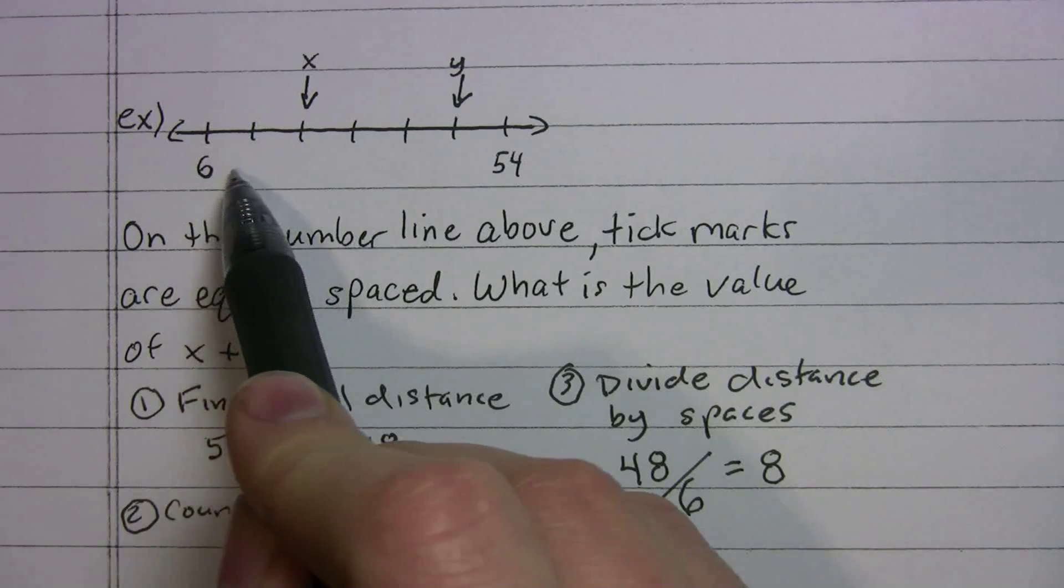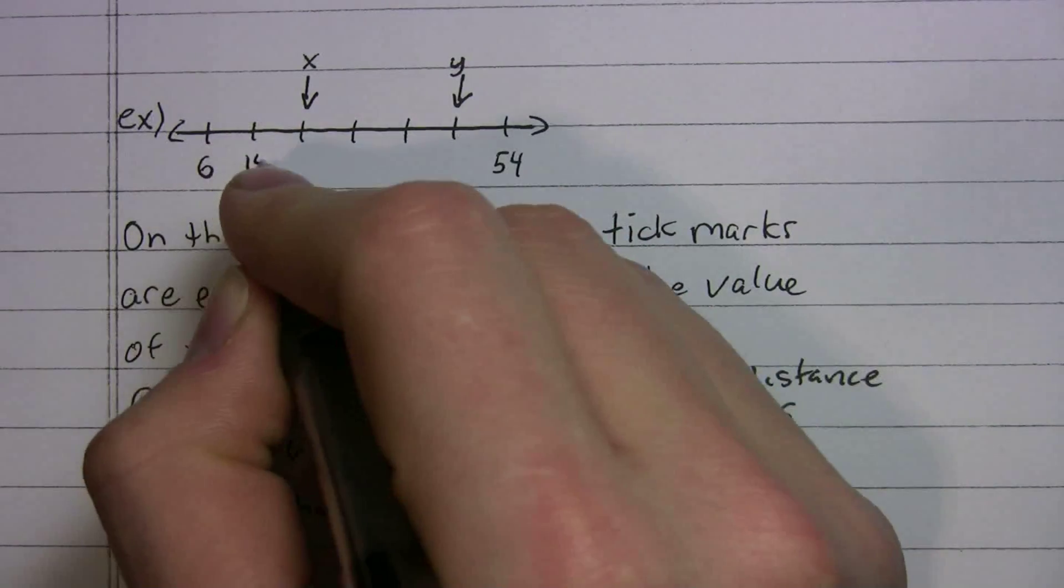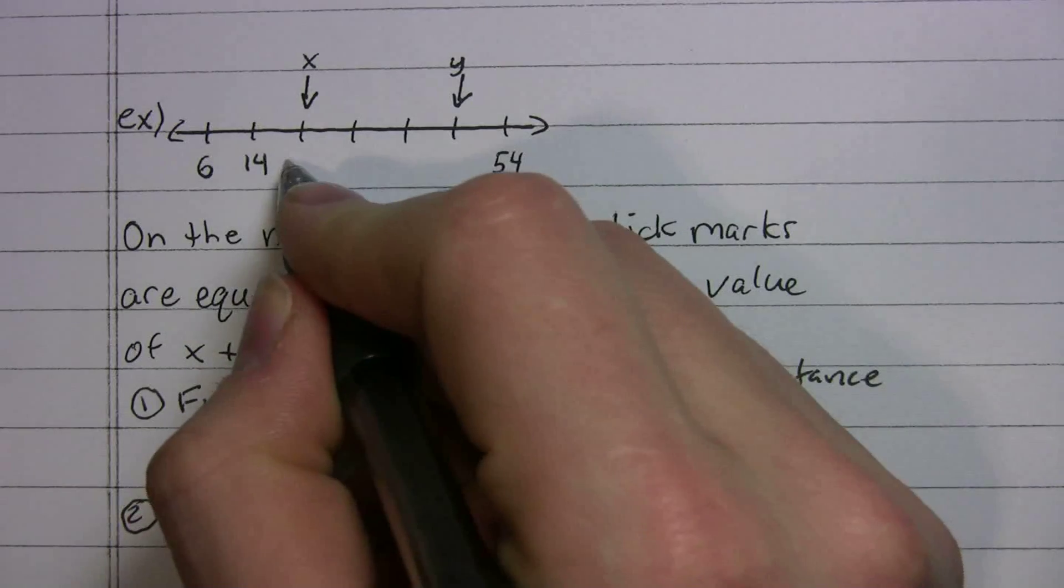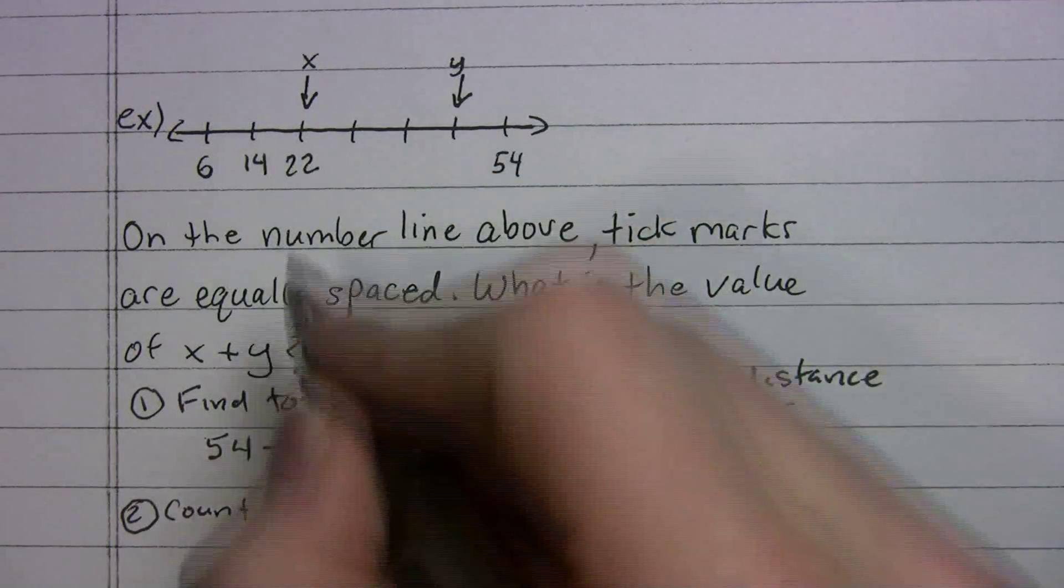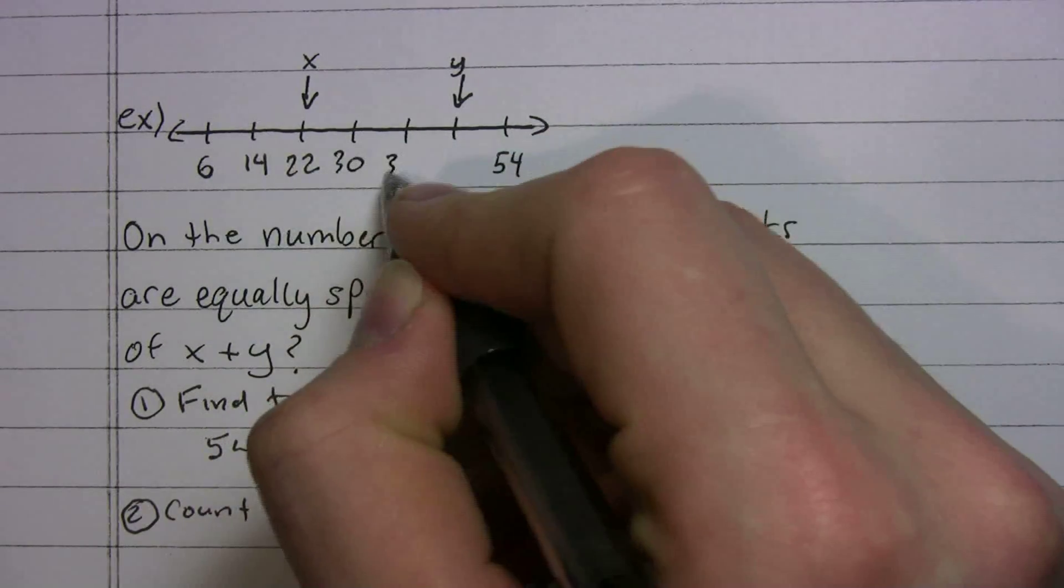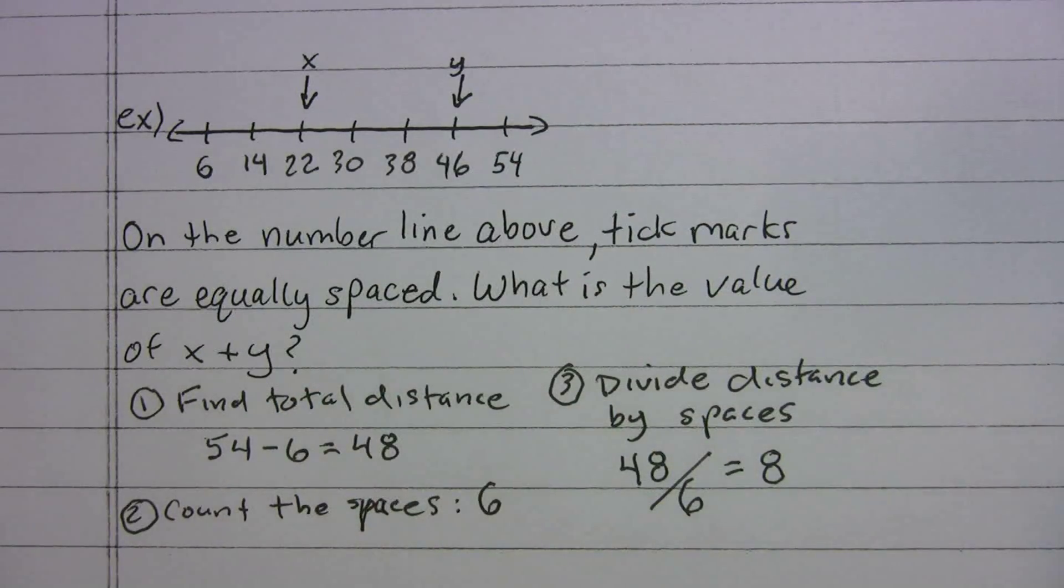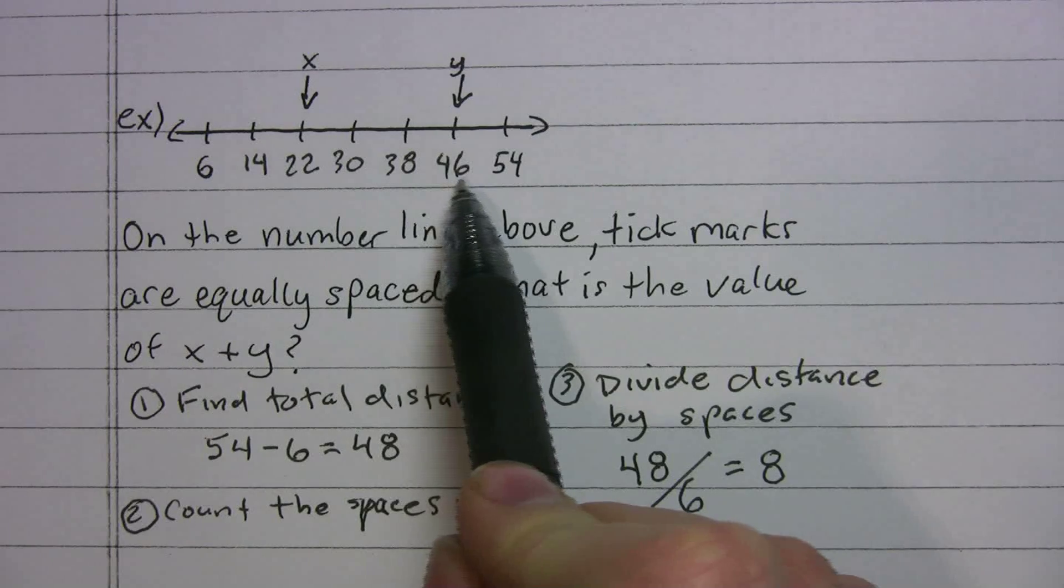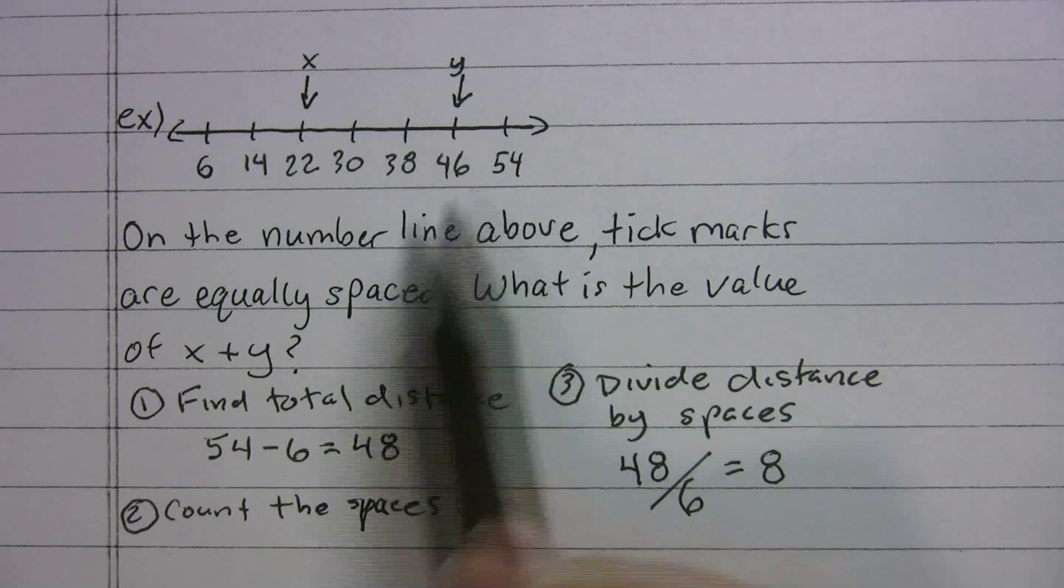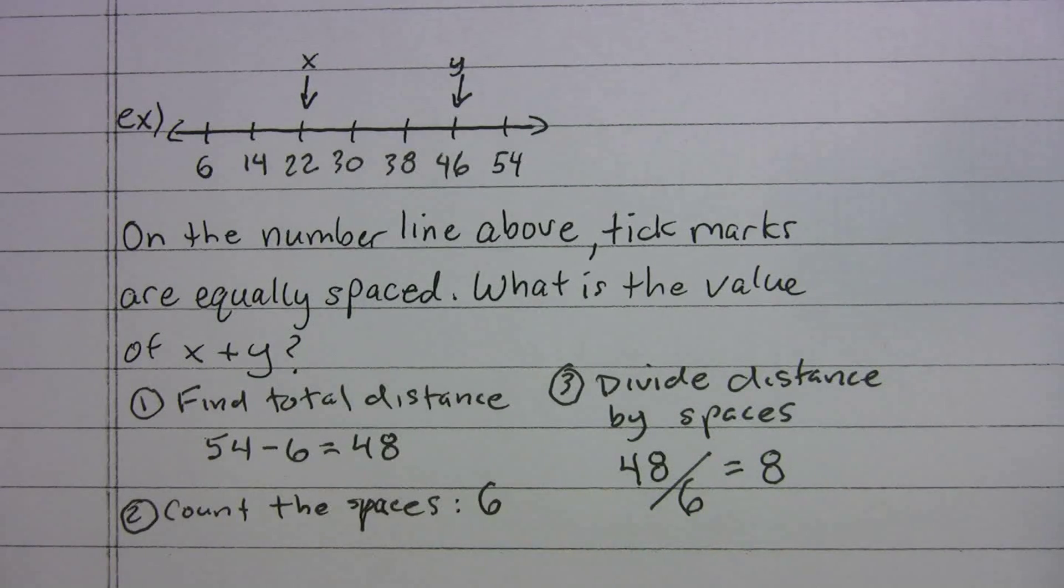We'll plug that back in. If each one is 8, that's going to be 6 plus 8. So that's 14 plus 8, 22 plus 8, 30, 38, 46. And it works, right? Because 46 plus 8 brings it right back to 54. So that worked. That was correct. And now we have our marks.